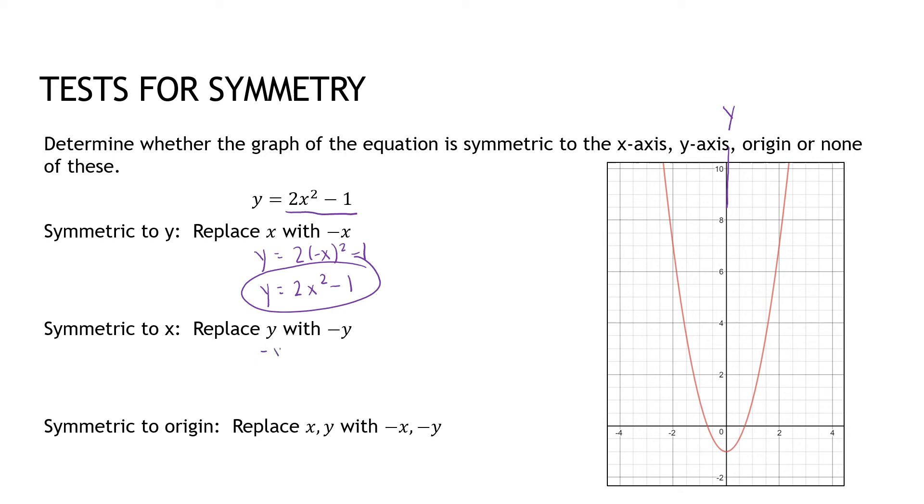If I do that for anything else, though, 2x squared minus 1, multiply everything by negative 1, gives me negative 2x squared plus 1. Not the same. If I replace both of them, negative y equals 2 times negative x squared minus 1. Keep the negative there for a moment. I get 2x squared minus 1. And then, of course, I would change all of the signs, so I would get y equals negative 2x squared plus 1. And again, not what I'm looking for. So that would be yes, no, no.